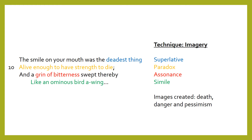Next we are looking at imagery. We have a superlative with 'deadest,' we have a paradox where two things co-exist that shouldn't be able to co-exist, and we have assonance — the 'i' sound of 'grin' and 'bitterness.' There is also a simile. The images created are of death, danger and pessimism.